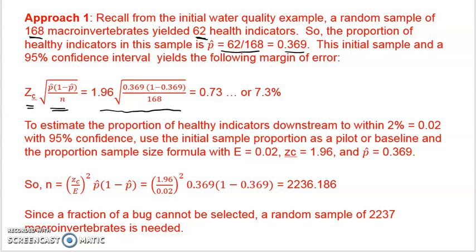Well, what if we wanted to be a little more accurate? So to estimate the proportion of healthy indicators to within 2%, not 7% but 2%, what size sample do we need to collect?